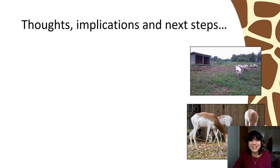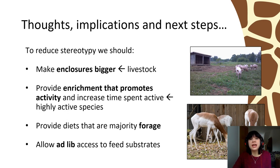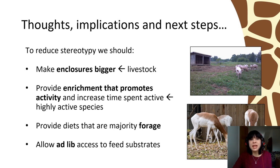What does all of that mean? This study highlights key things we can implement to reduce stereotypies in ungulates. We could make enclosures bigger — particularly important for livestock where we usually find the most restrictive enclosures. We could provide enrichment that promotes activity, especially useful in highly active species. We should provide diets that are majority forage, only using concentrates to supplement nutritional demands where needed, and allow ad lib access to feed throughout the day and night.